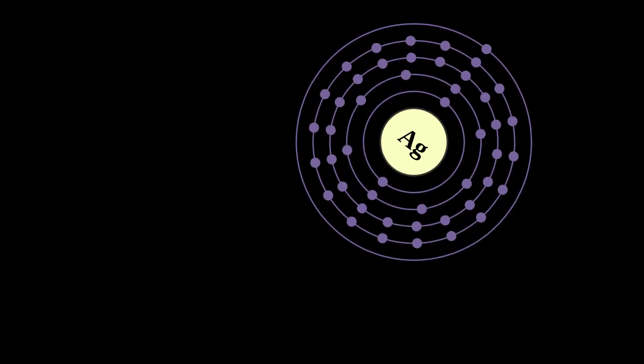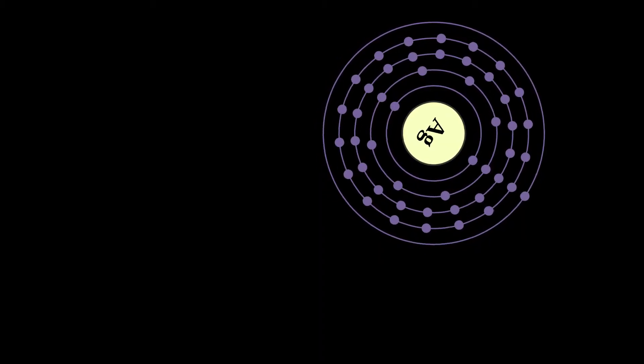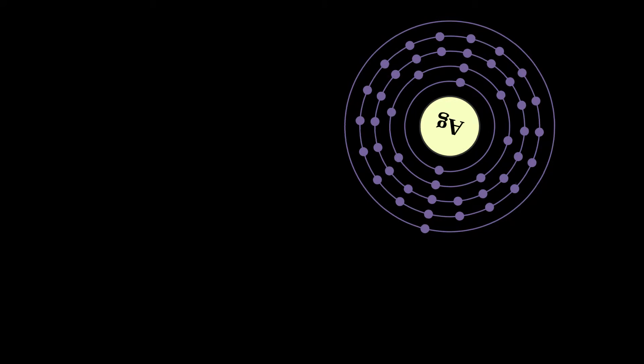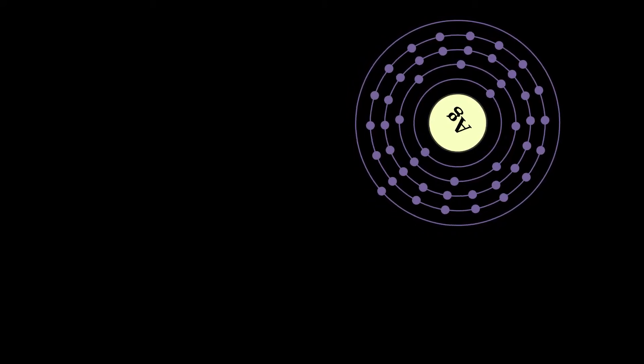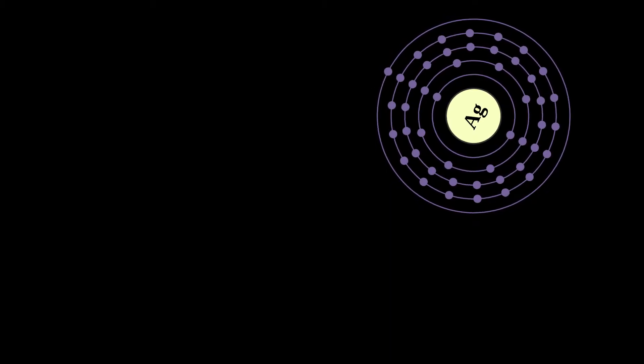The metal is found in the earth's crust in the pure, free elemental form, as an alloy with gold and other metals, and in minerals such as argentite and chlorargyrite. Most silver is produced as a by-product of copper, gold, lead, and zinc refining.